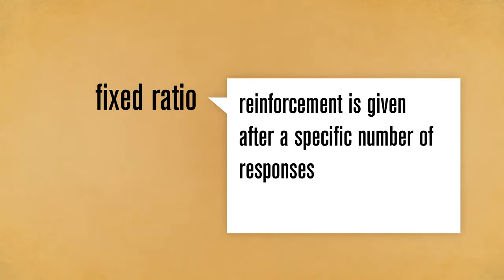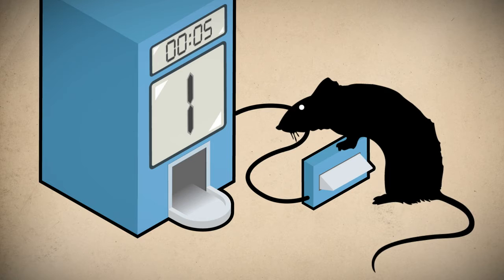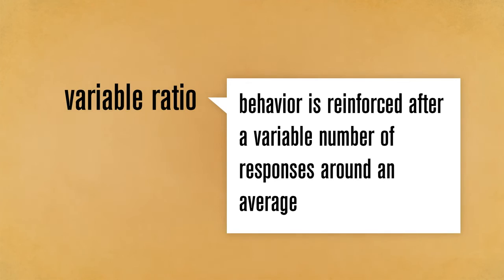With a fixed ratio schedule, reinforcement is given after a specific number of responses. For example, a fixed ratio of three would mean that reinforcement occurs for every third response. It does not matter whether the three responses occur one right after the other, or if some are delayed. Reinforcement is given only after the required number of responses is recorded.